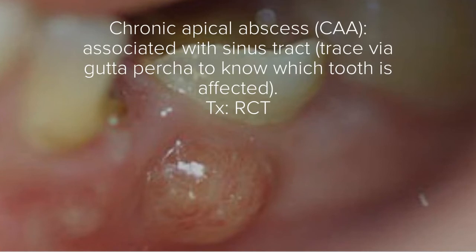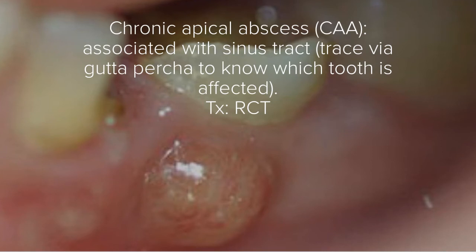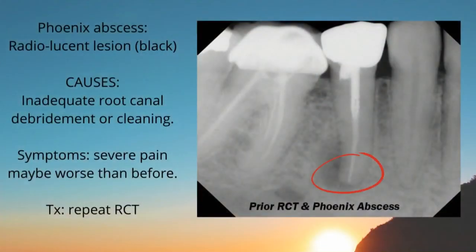The same symptoms occur in chronic apical abscess, but the key difference is that acute apical abscess is associated with swelling, whereas chronic apical abscess is associated with a sinus tract. You can trace the sinus tract with a gutta-percha point to identify which tooth is affected. The treatment for both is root canal treatment.